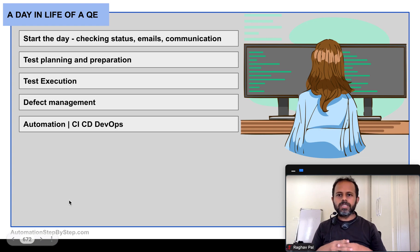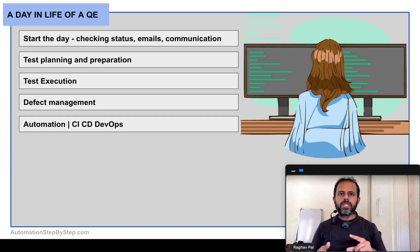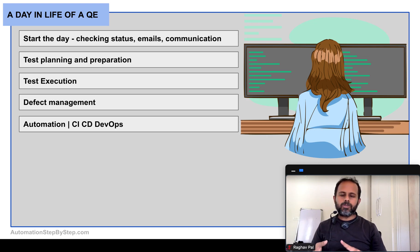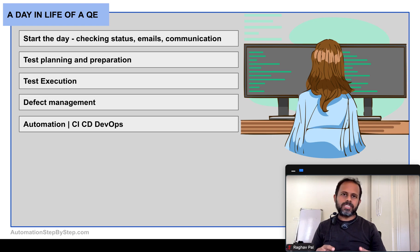If the organization has automation, CI/CD, and DevOps in place and you are involved with automation, you will spend a lot of time ensuring automation is working fine. Based on the application and requirements, you should have knowledge of the relevant automation tools — how to create scripts, manage and maintain the tool, write test cases, run them, and troubleshoot. You should also understand CI/CD and DevOps tools. I have created a separate video on the DevOps lifecycle and roadmap, which I'll link in the description.